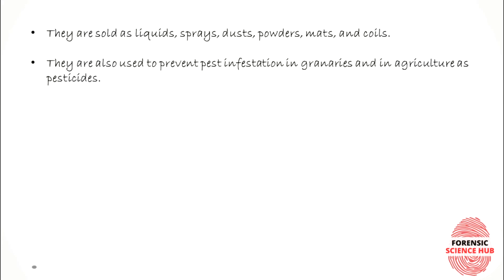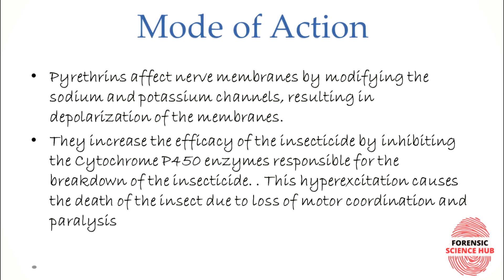Pyrethrins are sold in many different forms like liquid sprays, dust, powder, mats, and coils. They are used to prevent the infestation of pests or insects in granaries and in agriculture as pesticides.